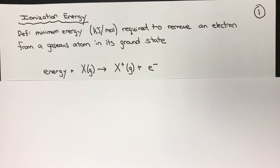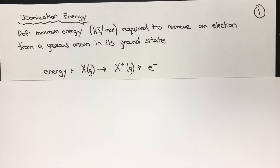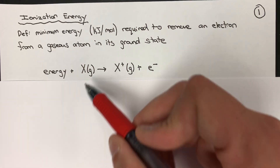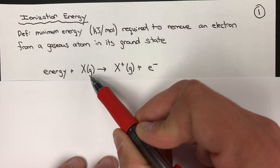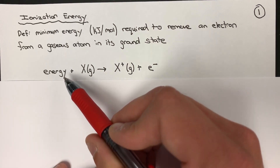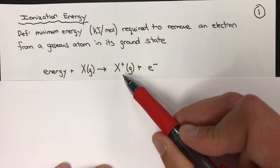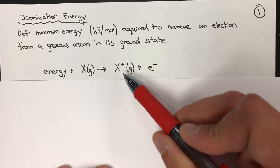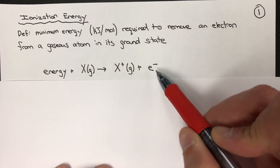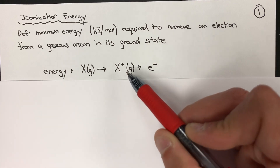Let's kick things off with ionization energy. Ionization energy is defined as the minimum amount of energy required to remove an electron from a gaseous atom in its ground state. By working with gaseous atoms, we limit things like intermolecular forces which could otherwise throw a kink in our calculations. So if we have some element X in the gaseous state and we supply sufficient energy, we can ionize that element, stripping away an electron to create a positive cation.